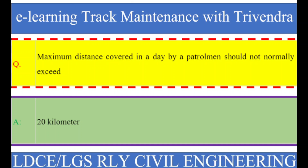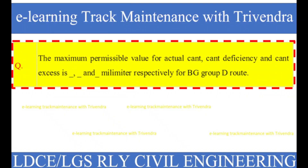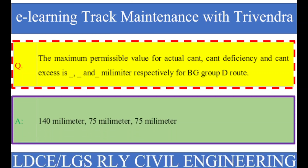Question number 62: The maximum permissible value for actual cant, cant deficiency, and cant excess in millimeters respectively for BG Group D route. The right answer is 140 millimeters, 75 millimeters, and 75 millimeters.